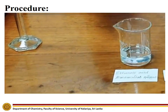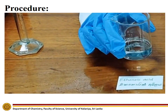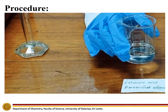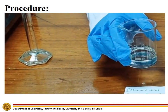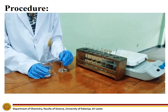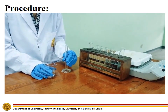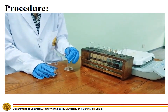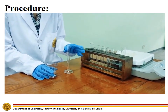First, we are going to perform all the experiments on ethanoic acid. For that, measure about 2 ml of ethanoic acid into 6 separate test tubes.